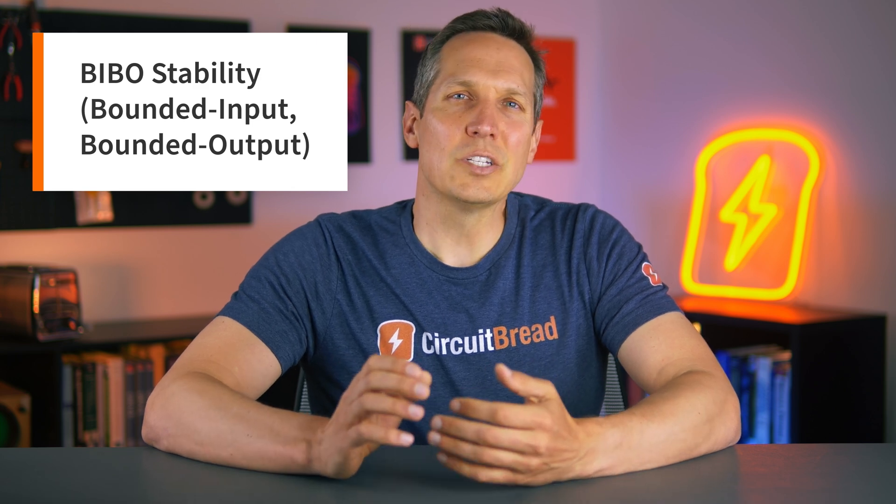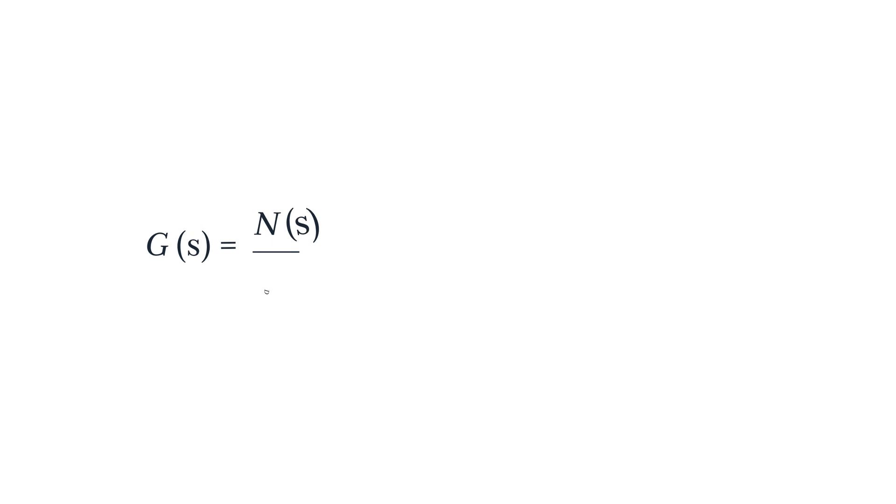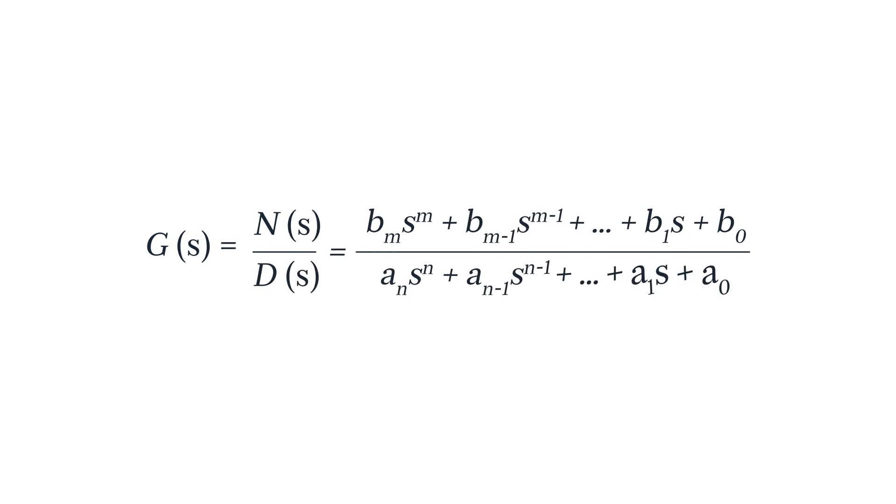So far we've been approaching this by looking at the input and output and using a gut check to see if a system is stable, but we can actually tell if a system is stable mathematically. Let's look at our stereotypical transfer system G(s), which is just a ratio of two polynomials. If you've been learning about control systems recently, this format shouldn't induce panic — if it does, you may want to go back to some of our earlier lessons and reacquaint yourself.